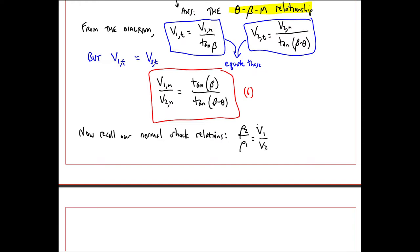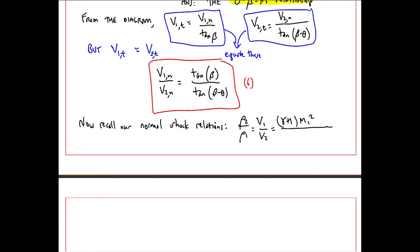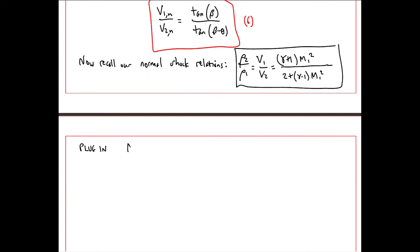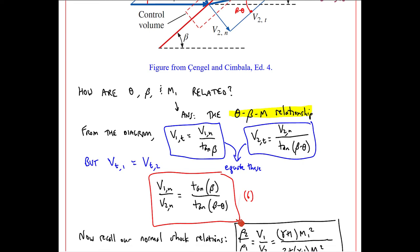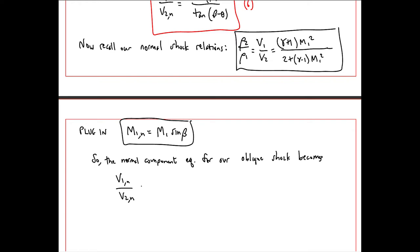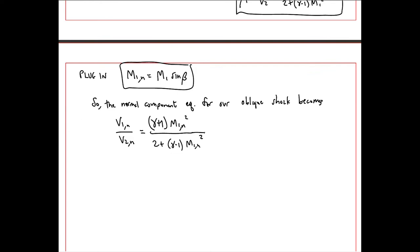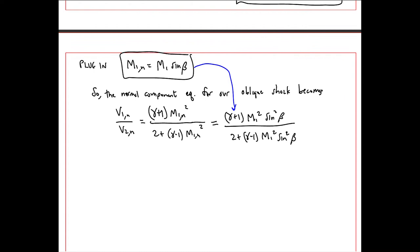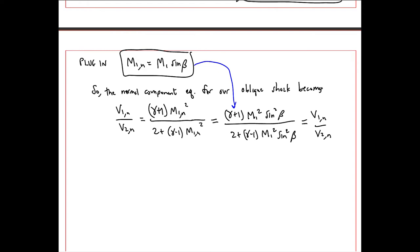Now recall our normal shock relations. We had rho 2 over rho 1 equal V1 over V2 equal gamma plus 1 M1 squared over 2 plus gamma minus 1 M1 squared. Now we plug in the normal component, where M1N equal M1 sine beta. So the normal component equation for an oblique shock is found by using V1N and V2N and M1N, since the normal component of Mach number or velocity is what changes across a shock exactly like the changes associated with a normal shock. This is the ratio of the normal components of velocity across an oblique shock. I'll call this equation 7.